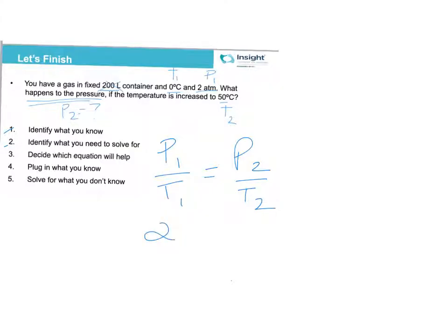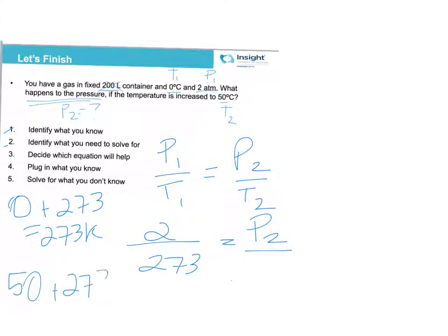I know pressure is 2. My temperature is 0 degrees Celsius but I need to convert that to Kelvin. So I'm going to do 0 plus 273 which is 273 Kelvin and I'll plug that in here. Then on the other side we're solving for P2 and I have my temperature 50 degrees Celsius but I need that to be Kelvin so I think that's 323.